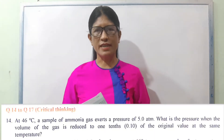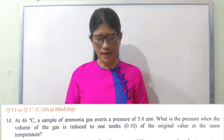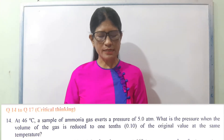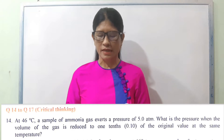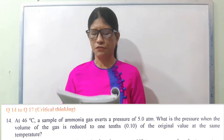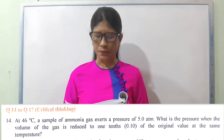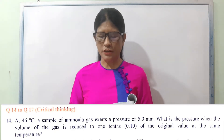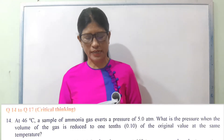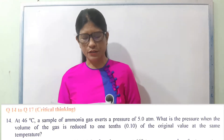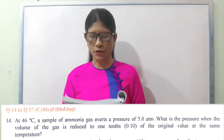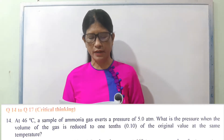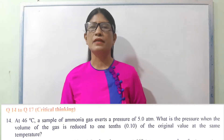Number 14: at 46 degrees Celsius, a sample of ammonia gas exerts a pressure of 5.08 ATM. What is the pressure when the volume of the gas is reduced to 0.1 of the original value at the same temperature?